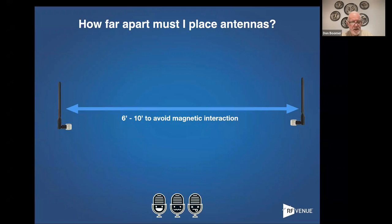The same applies whether we're talking receiver antennas or transmitting antennas for your IEMs, because they're both creating magnetic fields. That six-to-ten-foot distance keeps the magnetic interaction down to nearly zero.